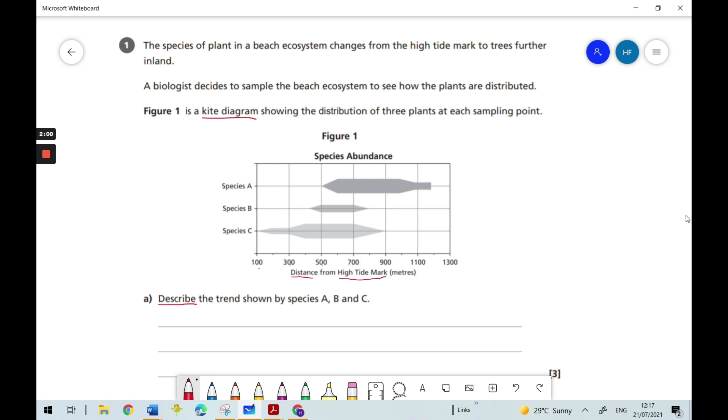And so on the y-axis you can just see the different names of the species or they've just been named A, B and C. So what we need to do now is we need to think about how we might describe that trend.